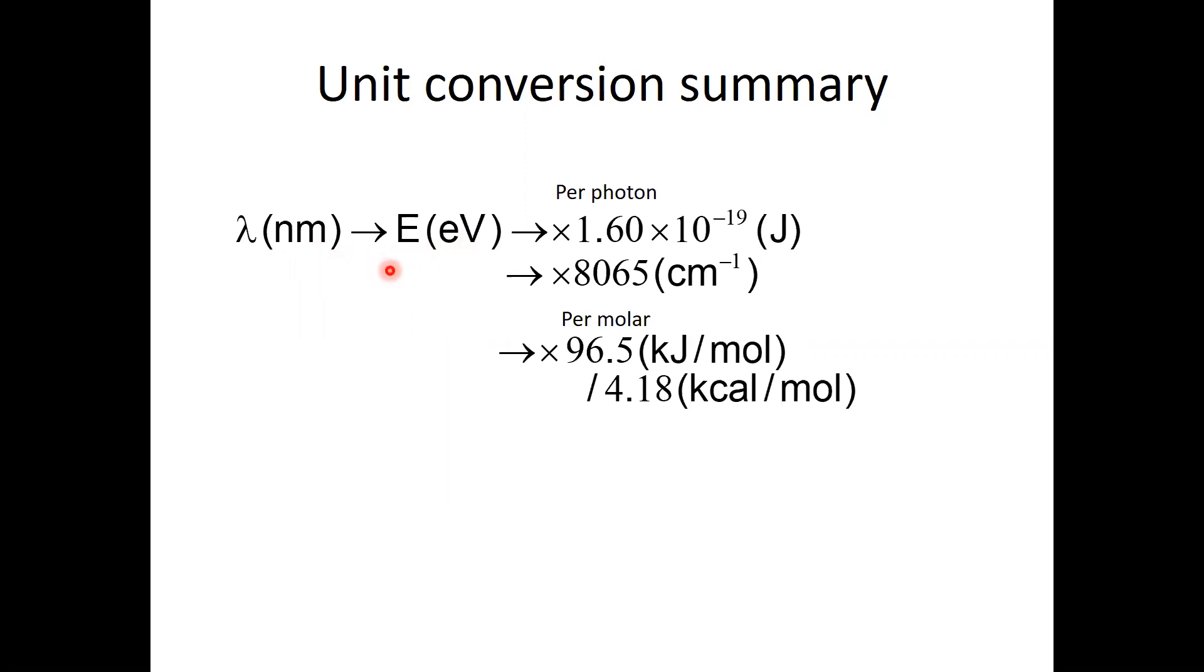I didn't write it here, but this can be converted by E obtained by 1240 divided by lambda in nanometer. And once you can obtain the energy in electron volt, you can convert the energy to the one photon energy multiplied by 1.6 times 10 to the minus 19.